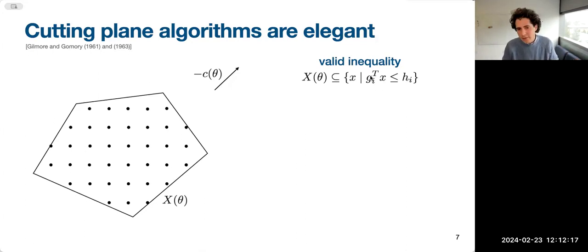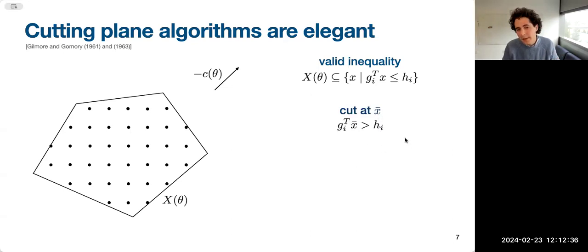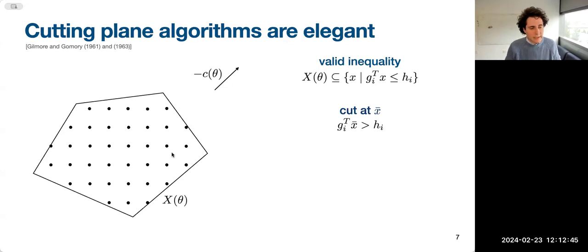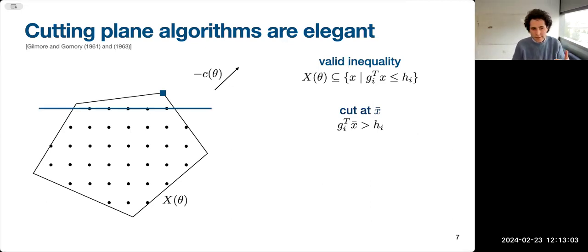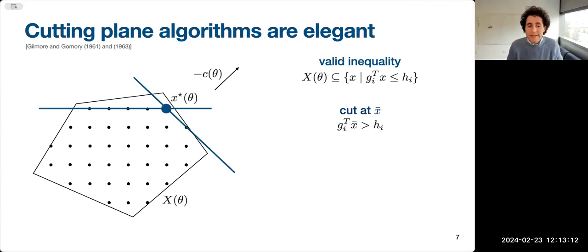Cutting plane algorithms can be nicely encoded into differentiable architectures, and they involve solving convex problems for which memory requirements and real-time deployment are manageable without heavy parallelization. Starting from the 1960s with Gomory and others, the main idea is that at every iteration you add new inequalities to refine the feasible region. An inequality is valid if it contains the feasible region of the original discrete problem. A cut at a point X-bar is an inequality violated at that point. You solve the relaxation, add a cut removing that solution, solve again, and continue until finding a feasible — and provably optimal — point.